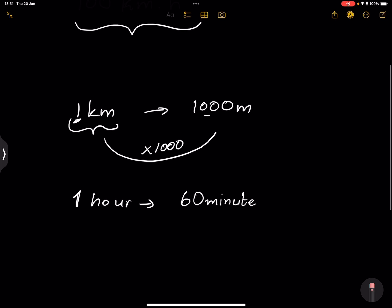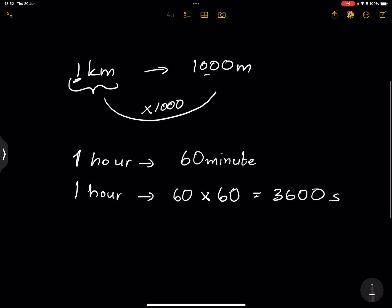So I'll say, well, one hour has got 60 minutes, but each minute has got 60 seconds. So it will be 60 times 60, which will be 3,600. Okay, so 3,600 seconds in an hour.